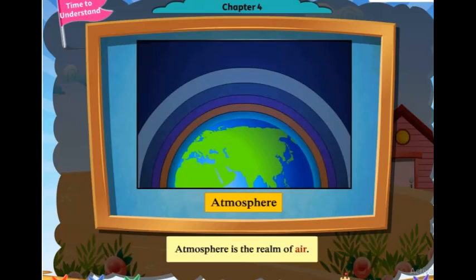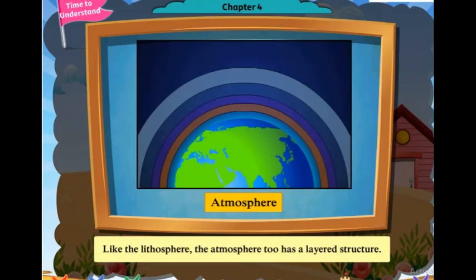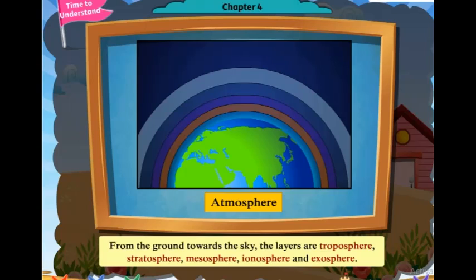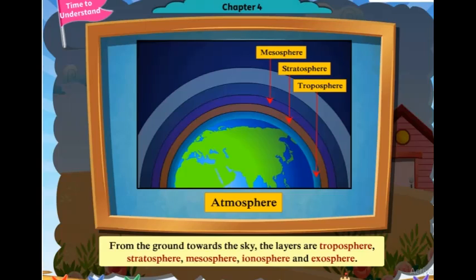The Atmosphere is the realm of air. Like the Lithosphere, the atmosphere too has a layered structure. From the ground towards the sky, the layers are: Troposphere, Stratosphere, Mesosphere, Ionosphere, and Exosphere.